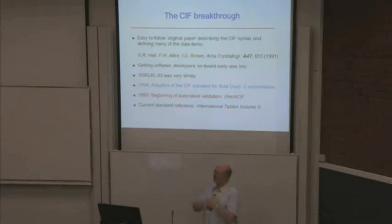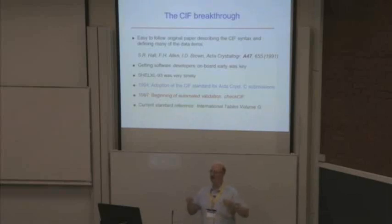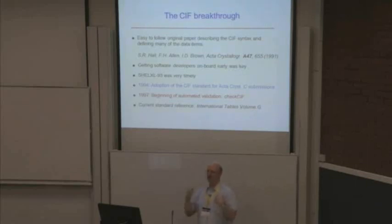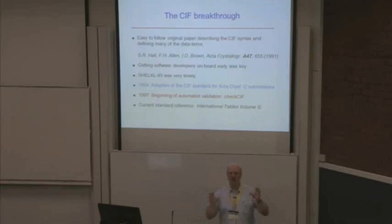Then Sid Hall had the idea that some things were not really right with these submissions and perhaps they should be checked more thoroughly. The editorial staff at Acta were doing a lot of that manual checking. Why not automate that and let the authors use a tool to validate their work? It saves them having to resubmit repeatedly — they do all that before they get to submission. And so validation was born.